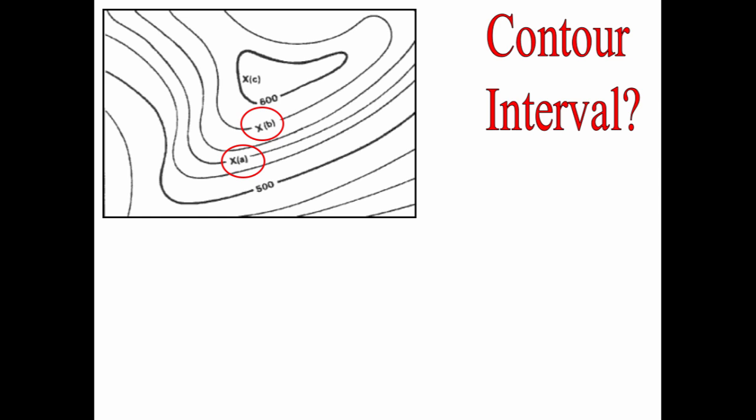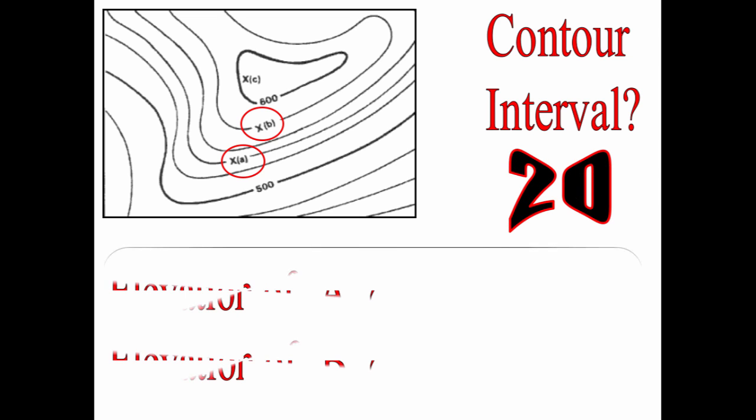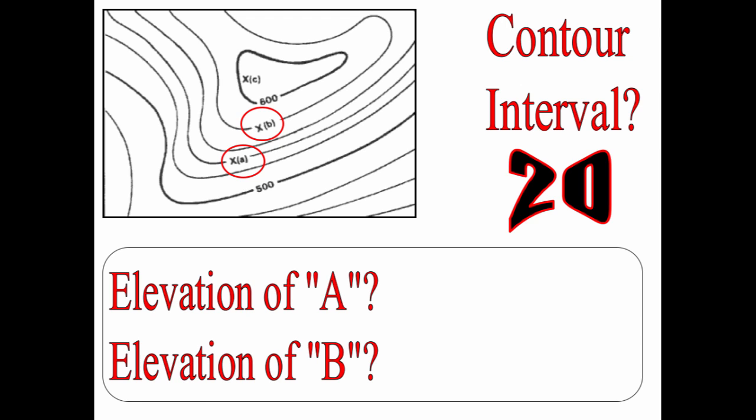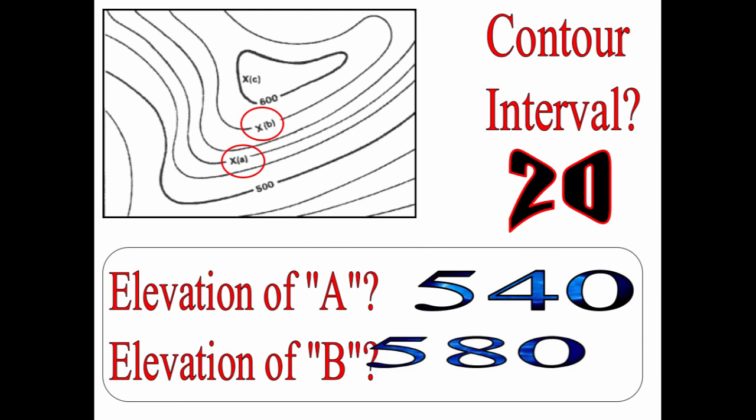Let's test our knowledge. First, let's figure out the contour interval. Looking at our contour index, if this is 500 and this is 600, and I have 1, 2, 3, 4, 5 lines, take 100 and divide it by 5. And that means the interval is 20 feet. So now I want you to tell me what do you believe the elevation is for A right here. And then tell me what do you think the elevation for B is. Pause the video and figure out these two. If this is 500 and the contour interval is 20, then that means 520, 540, 560, 580. So the elevation for A is 540 feet, and the elevation for B is 580 feet.